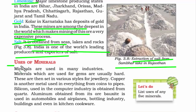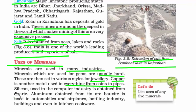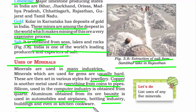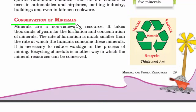Minerals are used in many industries. Since they are usually hard, they are good for making jewellery. Copper is used in making coins, pipes, or wires. We use silicon in computer industries for making computer chips. Bauxite is an ore of aluminium and is used in automobiles, airplanes, bottling industries, and even kitchen cookware.